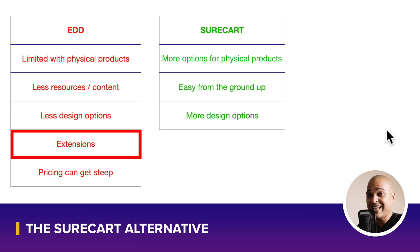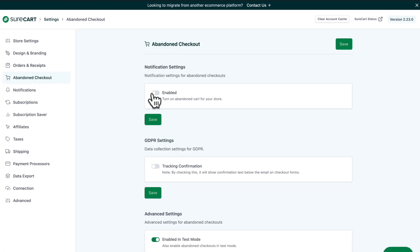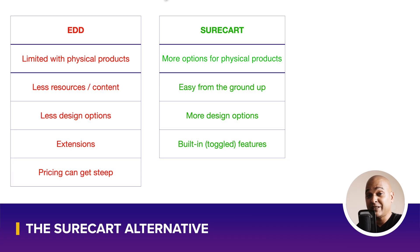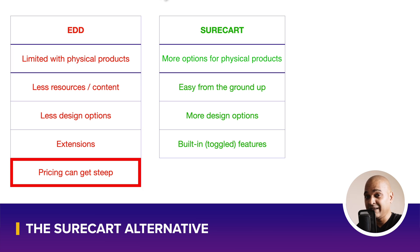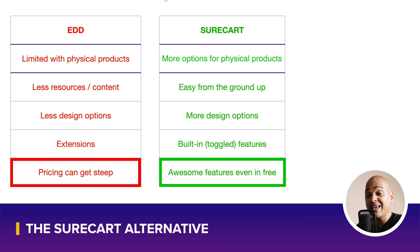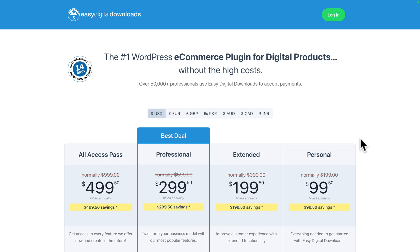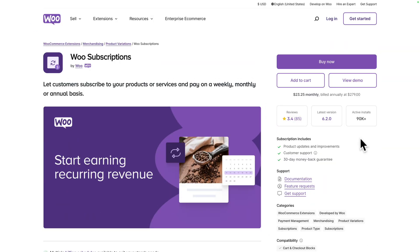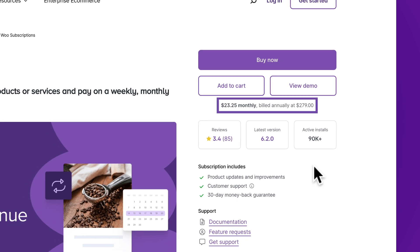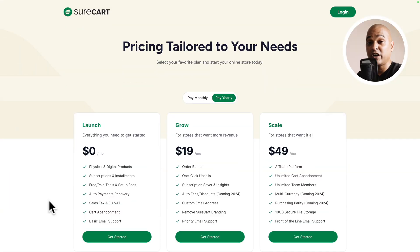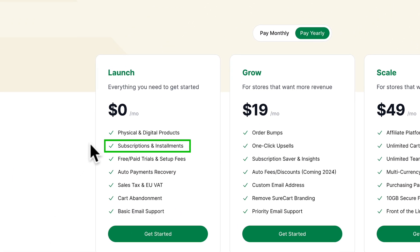We saw that EDD comes with fewer extensions than WooCommerce and requires extensions for pretty much everything. Whereas with SureCart, a lot of features are already built in and you can toggle them on and off. For example, with EDD or WooCommerce, if you want recurring payments you need a premium plan or the WooSubscriptions extension. With SureCart, you get subscriptions, installments, and even cart abandonment features in the free version.